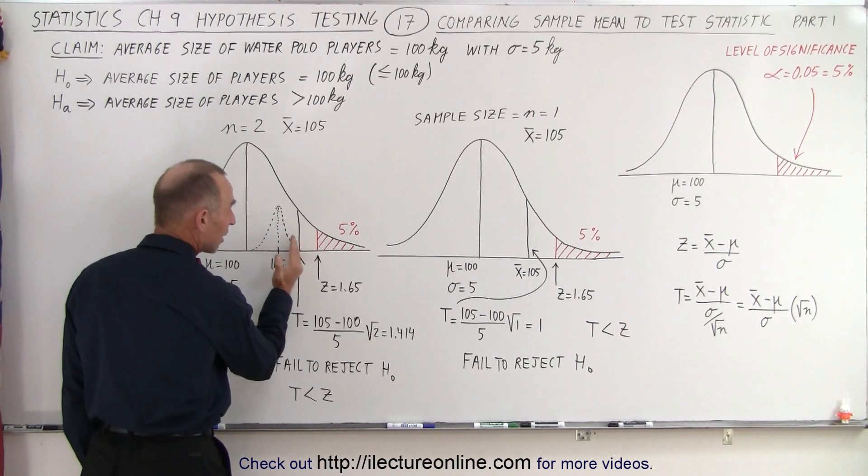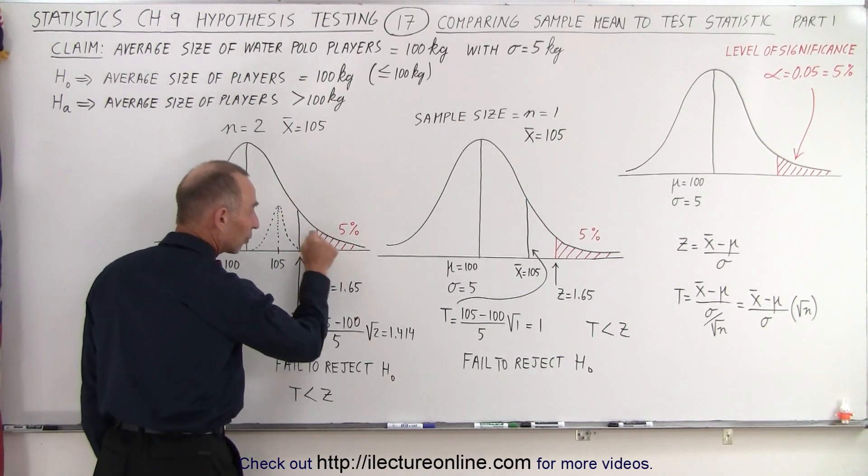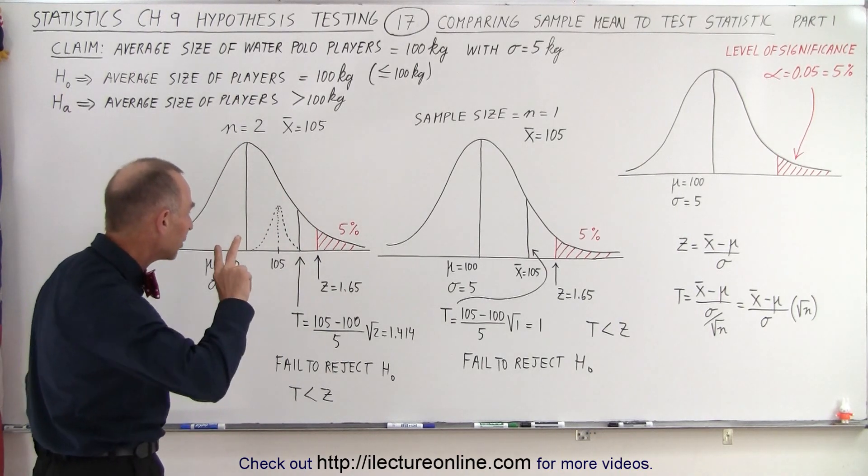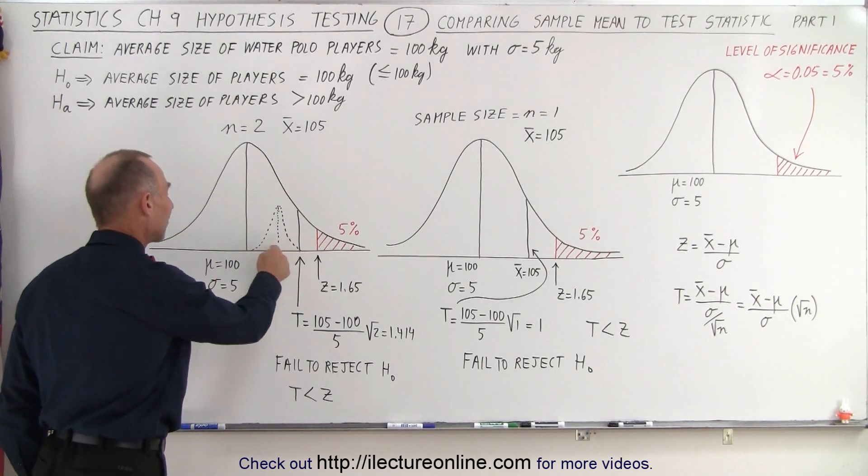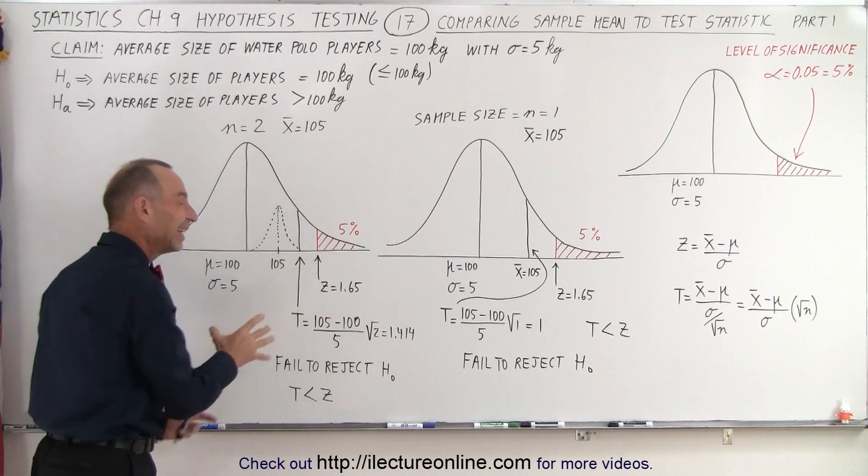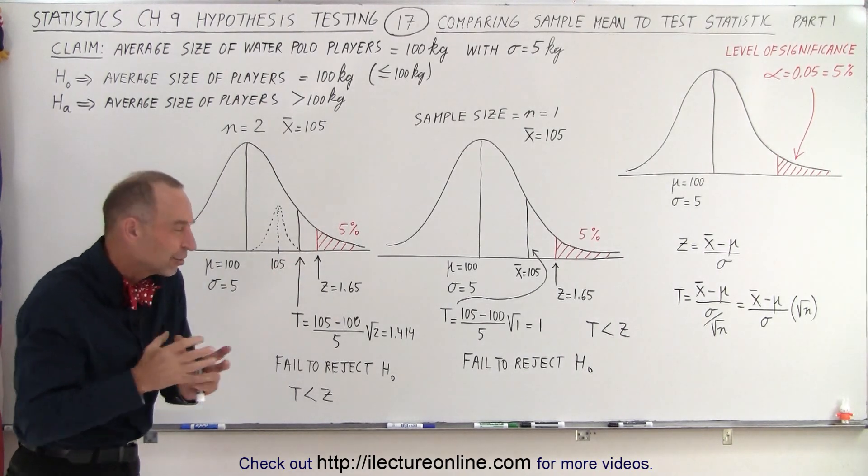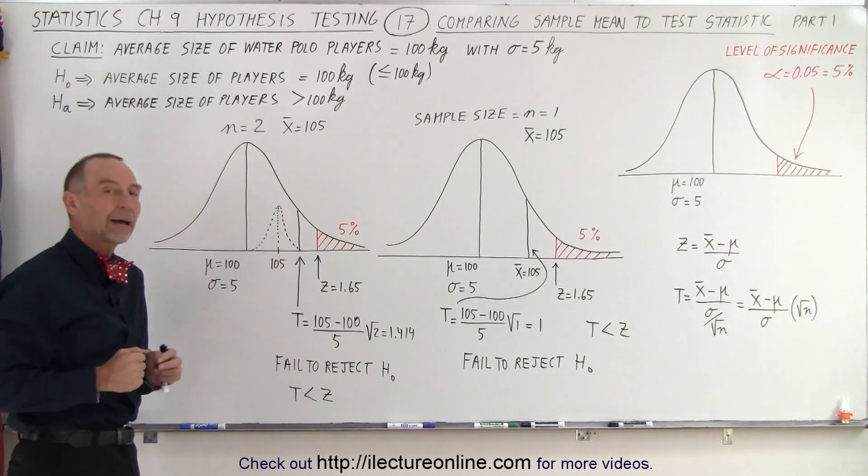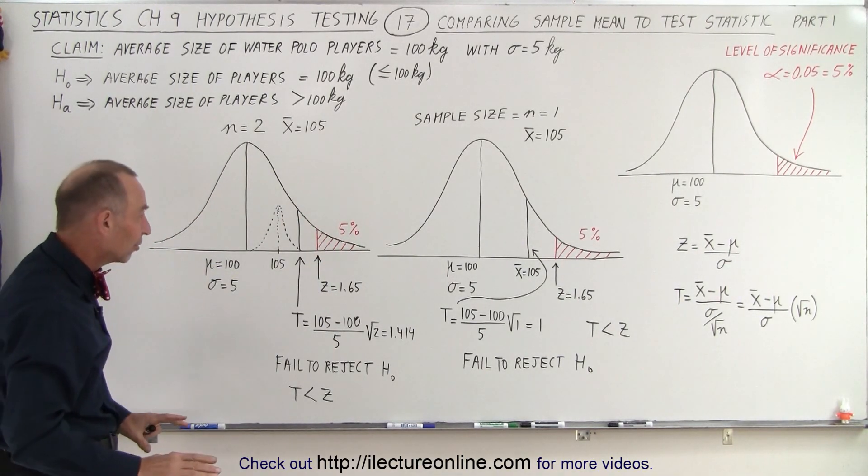It's moved the T out to the right, closer to the critical region, but not enough to push it into the critical region. Even by picking 2 players and having the average being 105 out of 2 players, it's not enough players to be confident enough that we should reject the null hypothesis, so we end up not rejecting the null hypothesis.